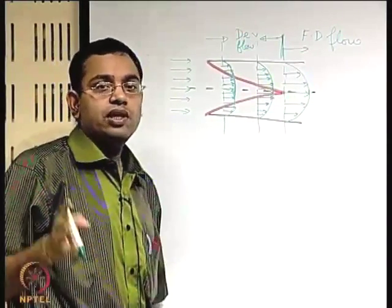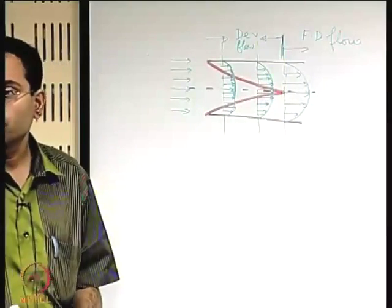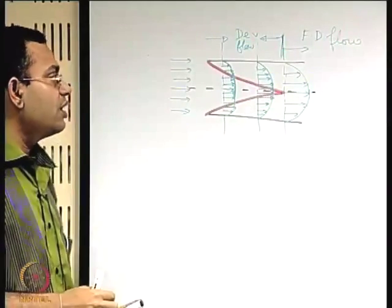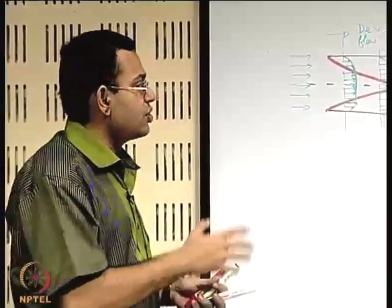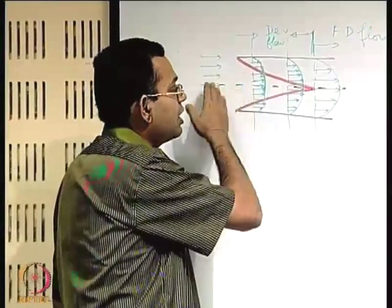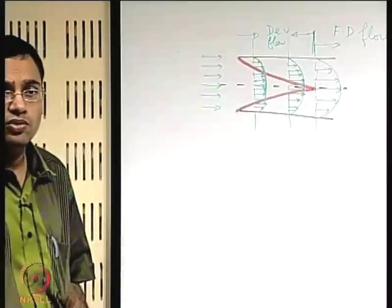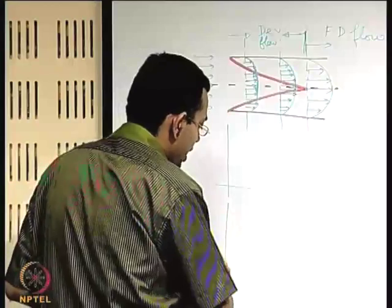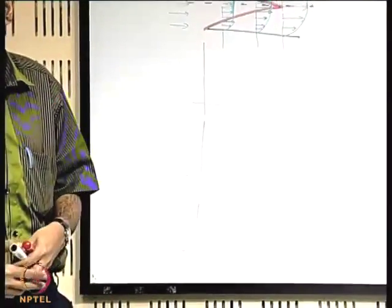When we discussed exact solutions of the Navier-Stokes equation, we obtained the velocity profile, wall shear stress, and friction coefficient in the fully developed region. In the developing region, semi-analytical or numerical methods can be used. Here we will make a qualitative assessment of how the centre line velocity, the pressure, and the wall shear stress vary with the axial coordinate. This type of qualitative understanding gives important engineering insight into how these parameters vary without going into the full mathematical details.